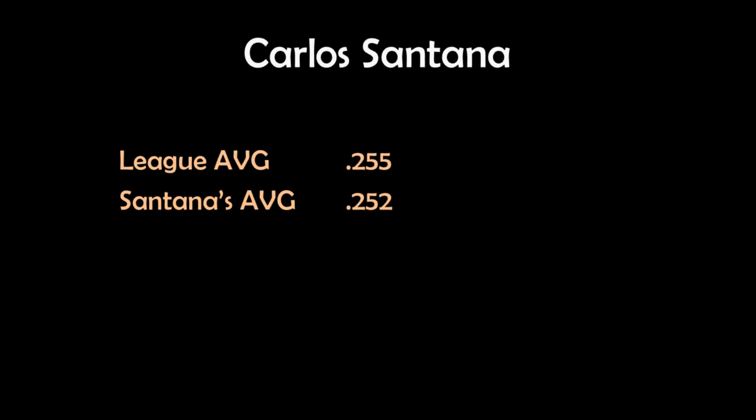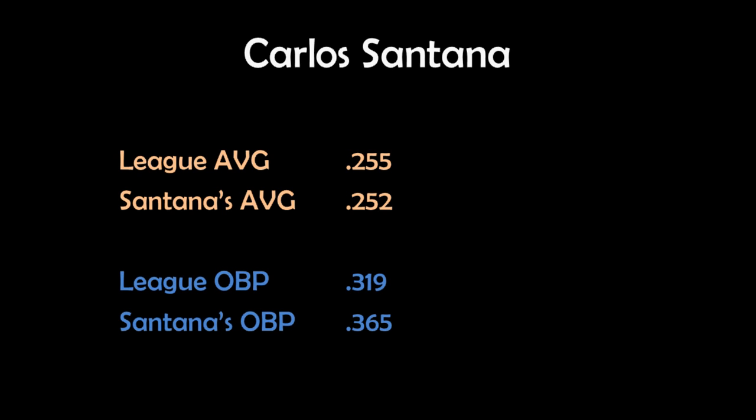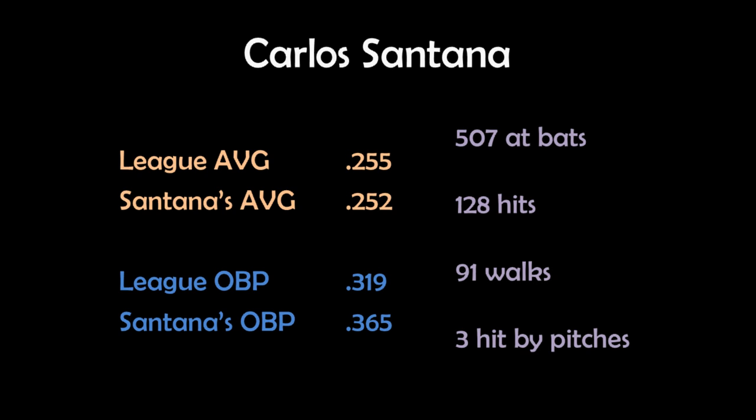So let's look at a quick example of a few players. First, we've got Carlos Santana, a catcher for the Indians. Last season, the league average batting average was .255, and Santana's batting average was .252. So based on that, you might think he's just an average hitter. But if we look at his on-base percentage, we see that Santana's .365 OBP was much higher than the league's average on-base percentage of .319. This was due in large part to the number of walks that Santana drew — he had 118 hits but 91 walks, and that's about as good of a walk rate as you're going to see.